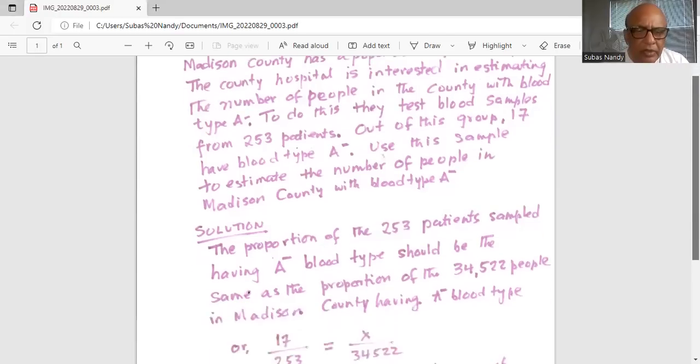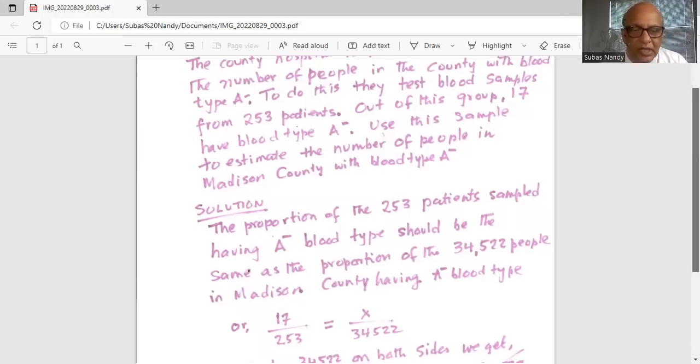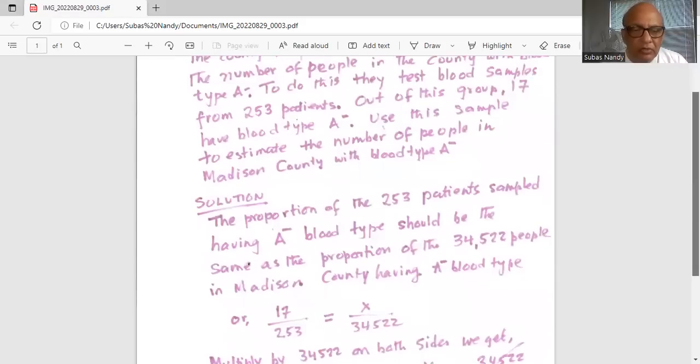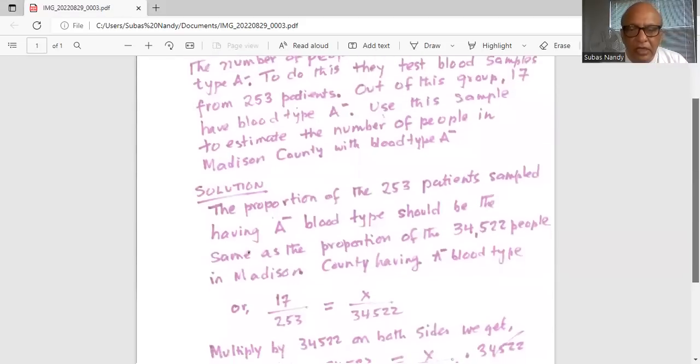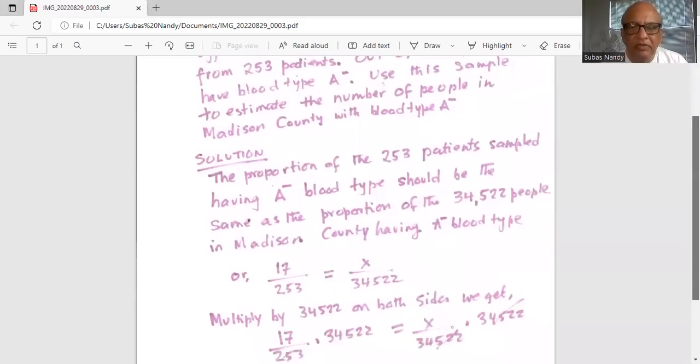Solution. The proportion of the 253 patients sampled having A- blood type should be the same as the proportion of 34,522 people in Madison County having A- blood type or the ratio should be same.